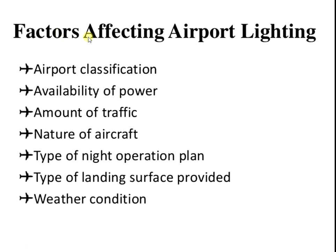Next, what are the factors affecting airport lighting? The first factor is airport classification; second, availability of power; third, amount of traffic; fourth, nature of aircraft; fifth, type of night operation plan; sixth, type of landing surface provided; and last is the weather condition. Airport classification and availability of power are the most important factors.